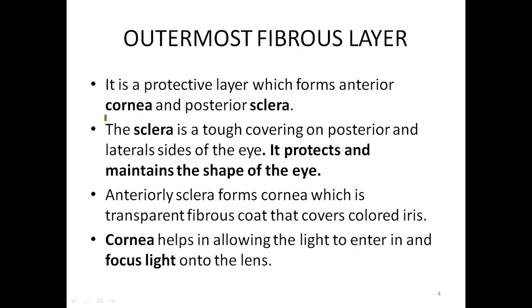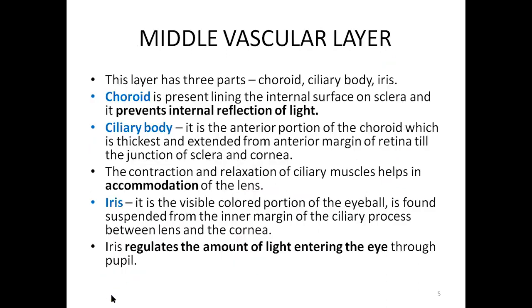The outermost layer is the fibrous layer. It has two important parts: the front portion is called the cornea, and the surrounding eyeball has a sclera. Most importantly, it functions as a protective covering for the eye. The cornea, the white portion of the eye, helps in allowing light into the eye and also focuses the light onto the lens.